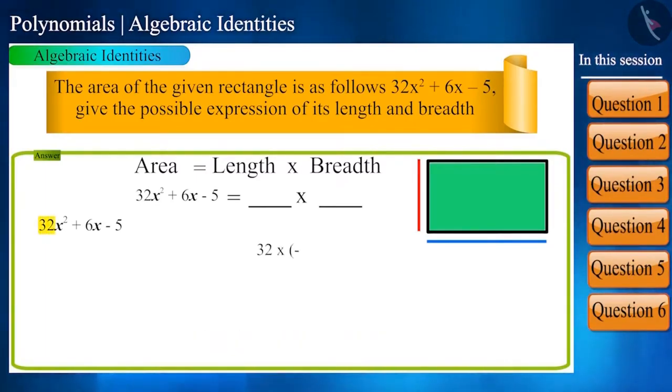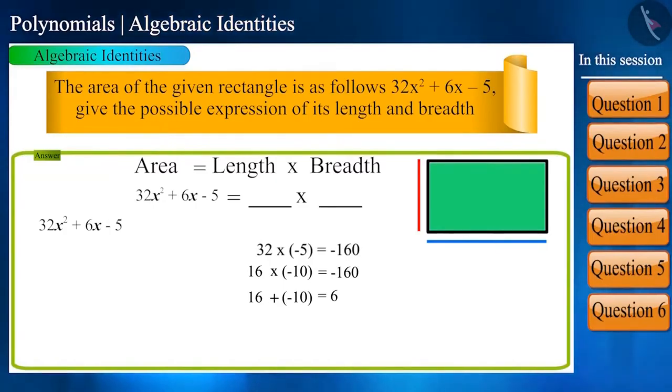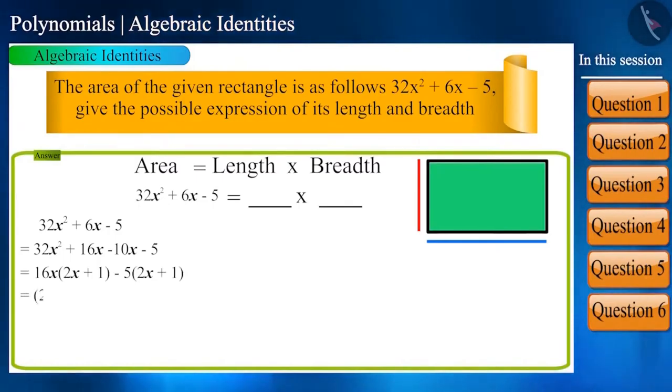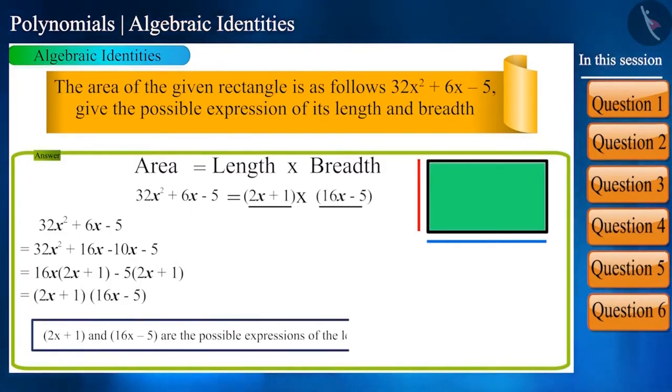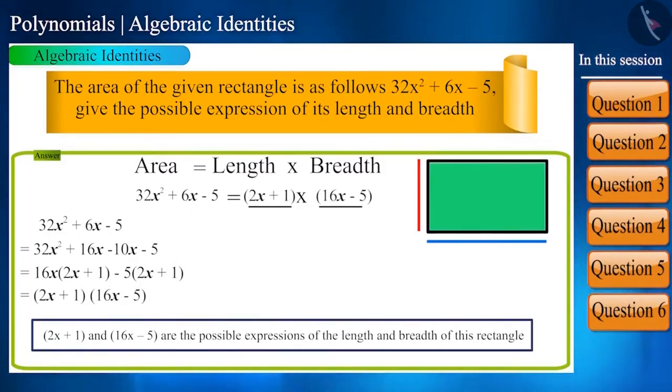So 32 multiplied by minus 5 will be minus 160. Now two numbers whose product is minus 160 and the sum is 6 are 16 and minus 10. Now, let's write it like this. (2x + 1) and (16x - 5) are the possible expressions of the length and breadth of this rectangle.